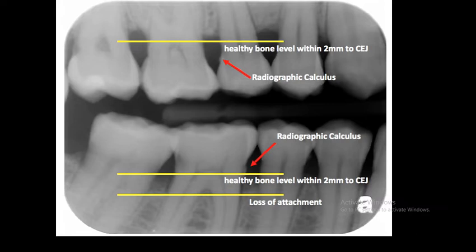The depth of the pocket is measured in millimeters. It should be recorded on the periodontal chart, and it is usual to record it at six points around the tooth — three lingual and three buccal. The attachment loss should also be recorded on the sheet in a similar manner.